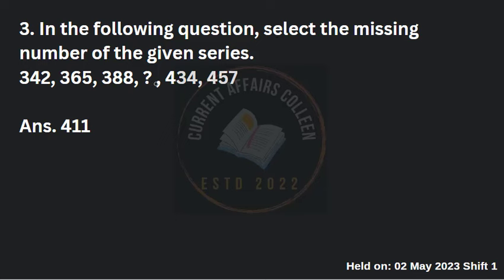Third question: the series is 342, 365, 388, ?, 434, 457. Looking at the differences — 365 minus 342 is 23, 388 minus 365 is 23, and 457 minus 434 is 23. There is a consistent pattern of adding 23 each time. So the missing number is 388 plus 23, which equals 411. The answer is 411.